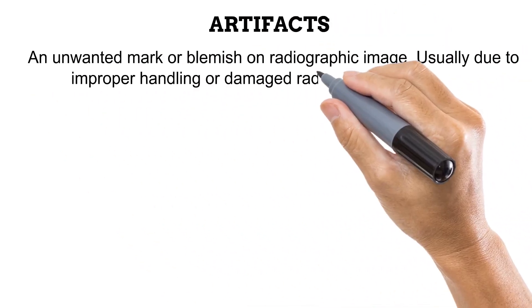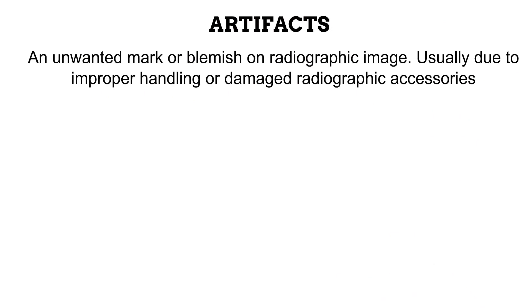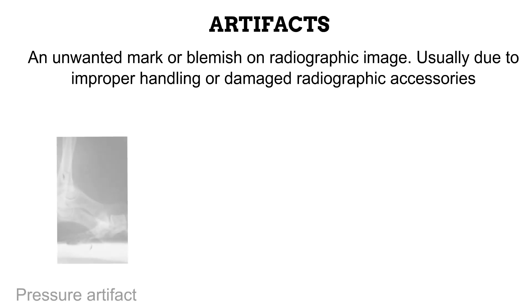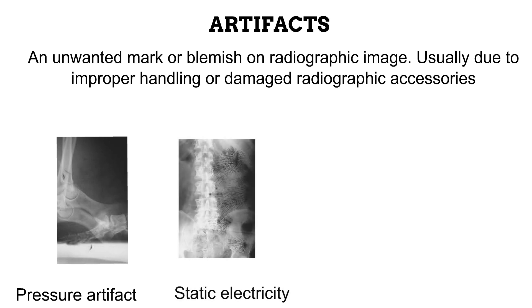Now that we have gone over radiographic distortion, let us look at what radiographic artifacts are. An artifact is an unwanted mark or blemish on a radiographic image, usually due to improper handling of the film or use of damaged radiographic accessories. The list of radiographic artifacts is by no means exhaustive. Let us look at a few. First is the pressure artifact — if you look closely at this radiograph, you would observe fingernail-like marks on it. These are not structures on the anatomy; rather, they are due to pressure of the fingernails of whoever handled the film during processing. These types of artifacts are also known as crimp marks. On this radiograph, you would observe some spider or tree-like marks, which are due to the build-up of static electricity on the film. This build-up occurs when a radiographic film is slid into the cassette, in areas of low humidity, and when the radiographer wears clothing material that encourages static electricity build-up — a good example being silk.